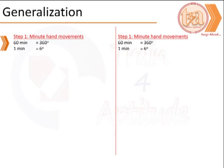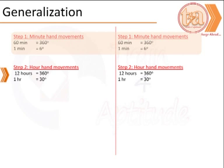The first step in generalization is to find the degree equivalent of each minute, that is 6 degrees equals 1 minute. Next is to find the angle covered by the hour hand, so in 1 hour it covers 30 degrees.